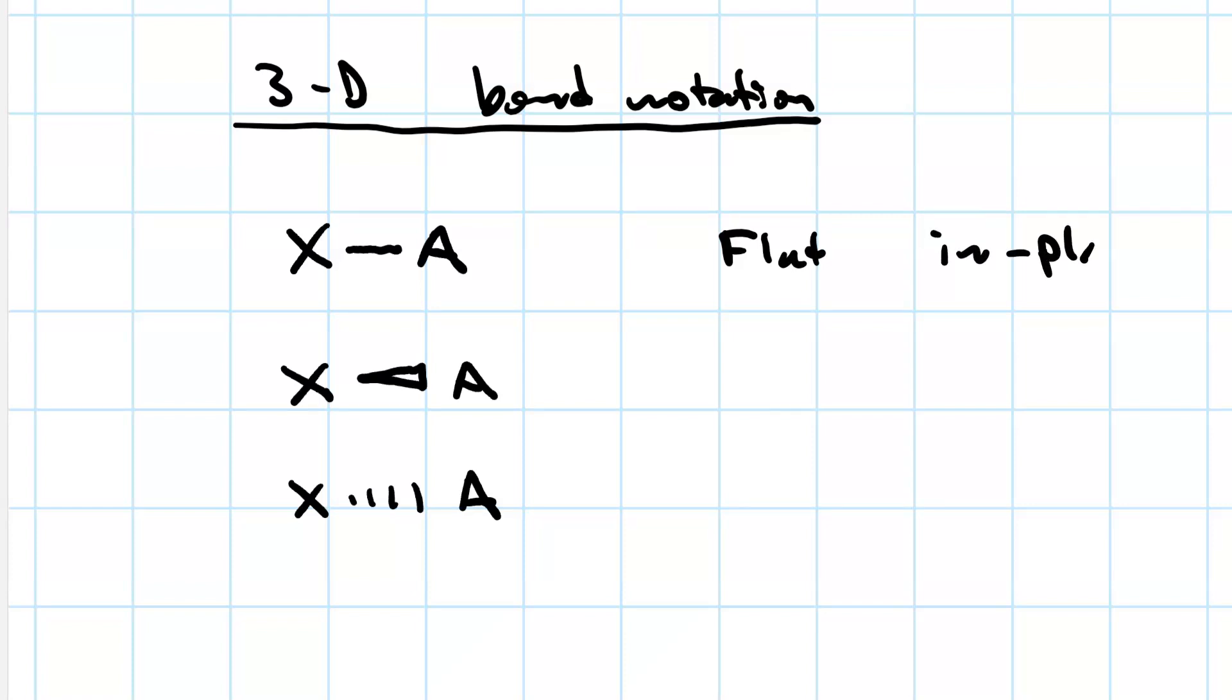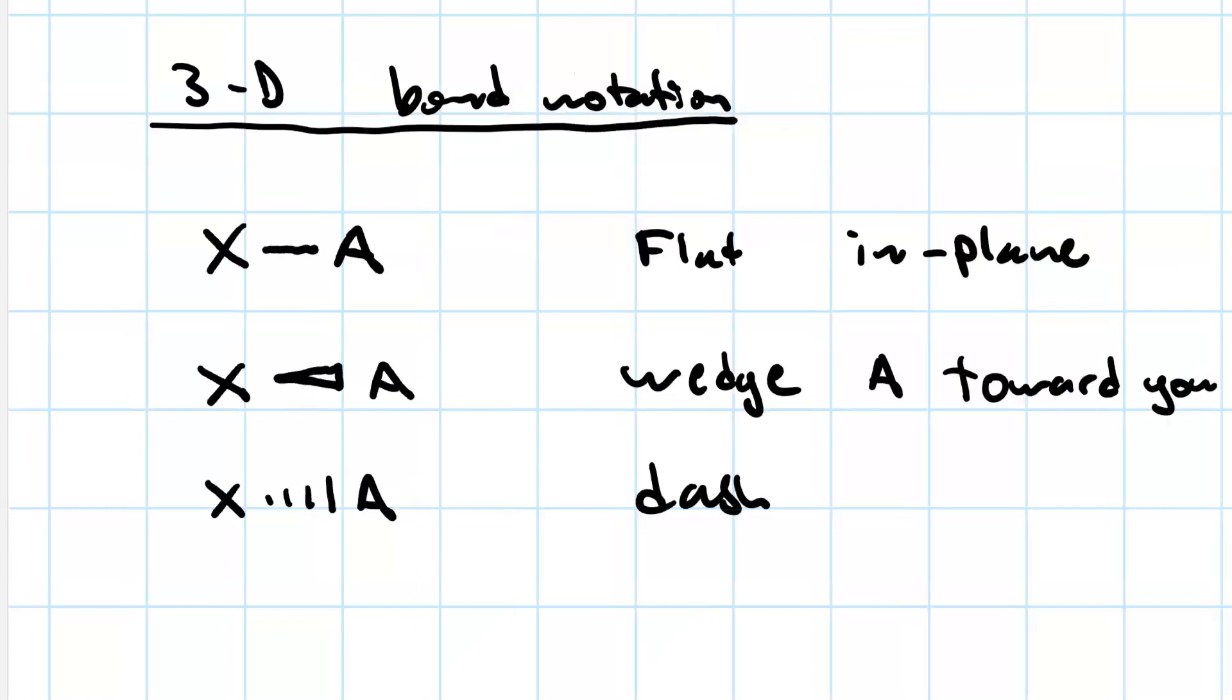The second bond is what's called a wedge, and this means that the A is coming toward you—the atom at the fat end of the wedge is coming toward you. The third type of bond is called a dash, and in this case, atom A at the fat end of the dash is going away from you or down below the plane of the paper.